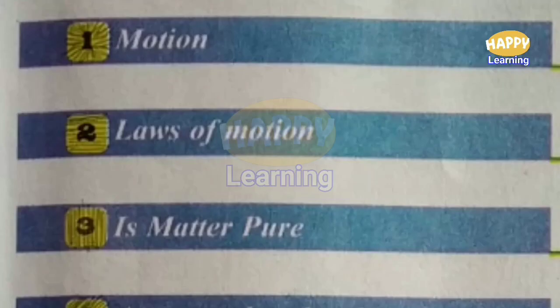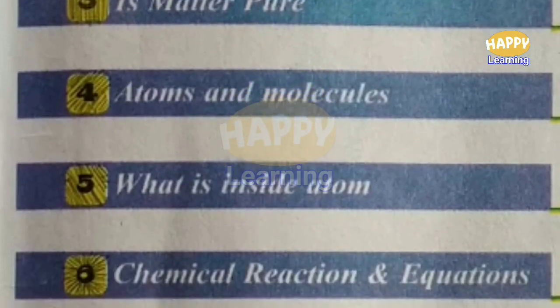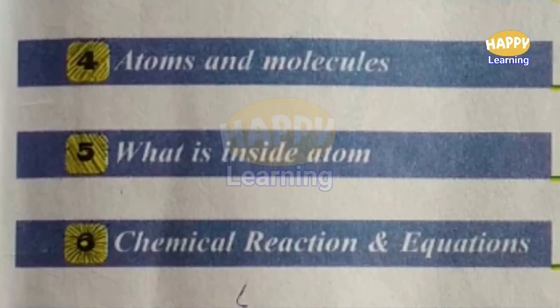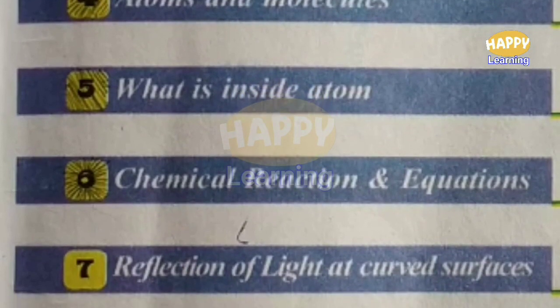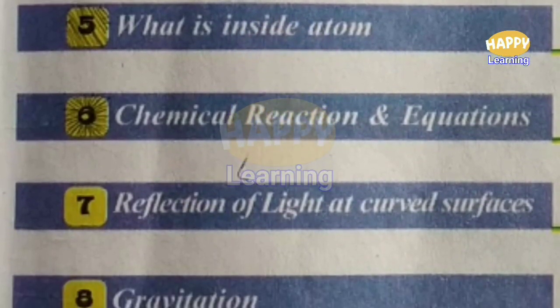Here, total 12 chapters are there. First one: Motion. Second one: Laws of Motion. Third one is Matter in Our Surroundings. Fourth chapter: Atoms and Molecules. Fifth chapter: What is Inside the Atom. Sixth chapter: Chemical Reactions and Equations.